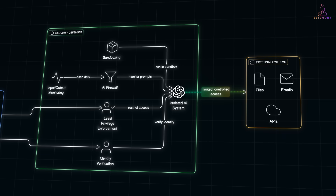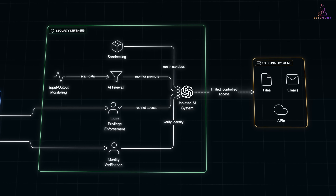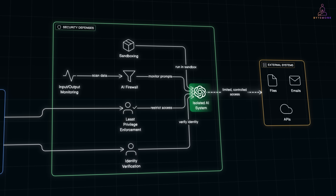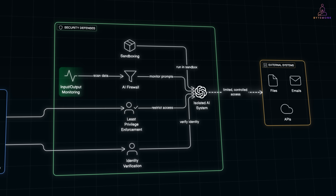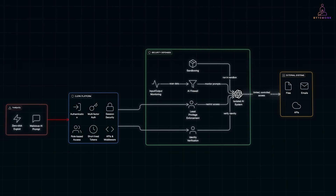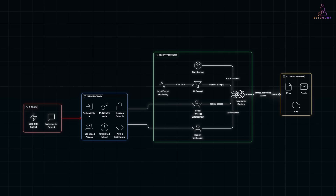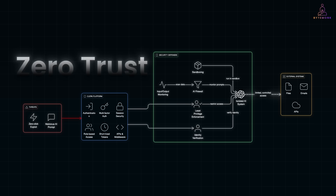Next, limit permissions and access. Don't give every app full control over your files, contacts, or microphone just because it asks. The same rule applies to AI agents — give them only what they truly need. Then, isolate your AI systems. If you're using tools that can read your emails or connect to external APIs, run them in a sandbox: a safe environment where, even if something goes wrong, it cannot reach the rest of your system. Also, watch the inputs and outputs — security researchers now recommend AI firewalls, systems that scan incoming data for prompt injections and outgoing responses for leaks. Think of it as a content filter for your AI. And finally, adopt a zero-trust mindset: assume every message, link, or request could be malicious until proven safe.